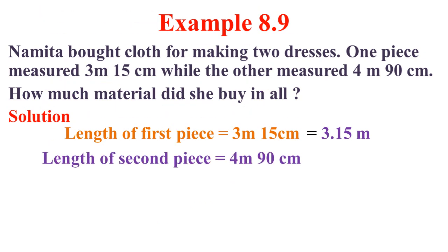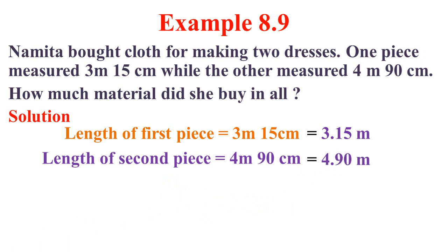Then the length of the second piece equals 4 meter 90 centimeter. The measurement is again in different units, so we convert smaller unit into biggest unit. 1 centimeter equals 1 by 100 meter. So 90 divided by 100, written as a decimal, is 0.90 meter. Adding with 4 meter gives 4.90 meter. These two measurements are in meter and they are like decimals.